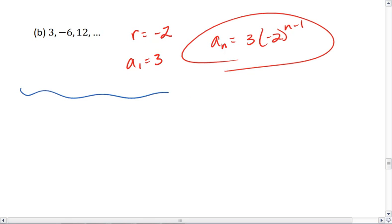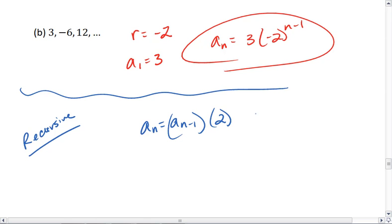And for our recursive, we get a sub n is the previous term multiplied by 2. This only works for the second term and above, and we know that the first term is 3.